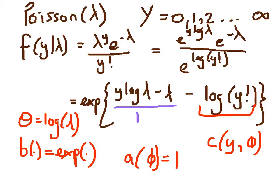We can see here we have the Poisson distribution written in one of the exponential family formats. This is the canonical form, the form that we're most likely to meet when working with generalised linear models.